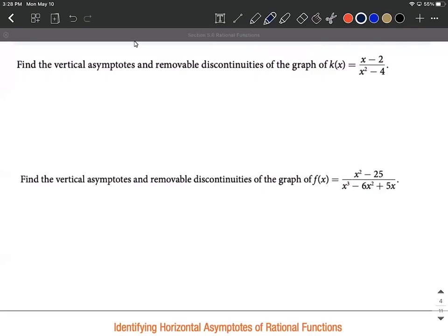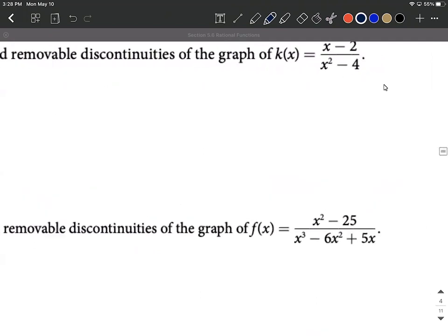Okay, let's find some vertical asymptotes and removable discontinuities if we have any. So when we're given these rational functions, what you always want to do is start out and just factor whatever you can first.